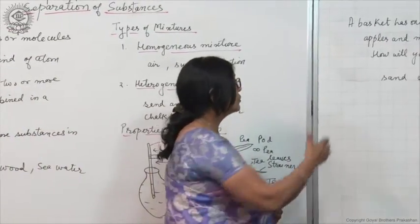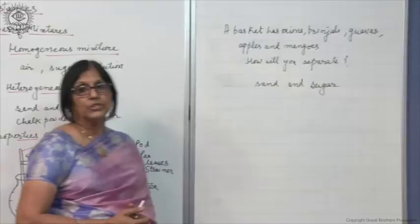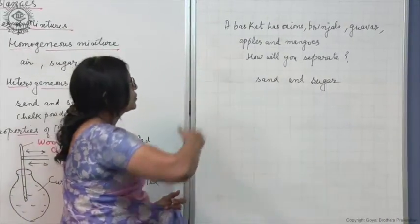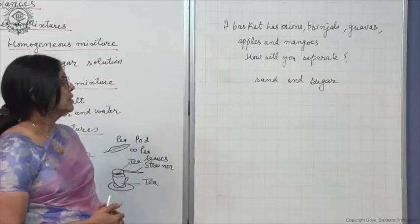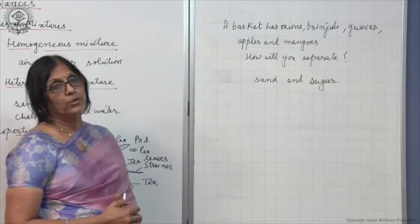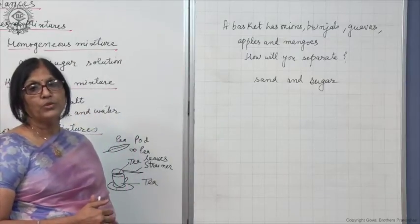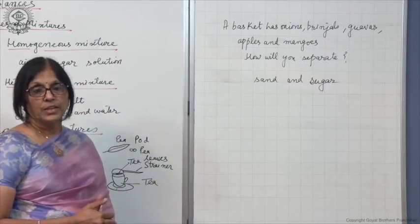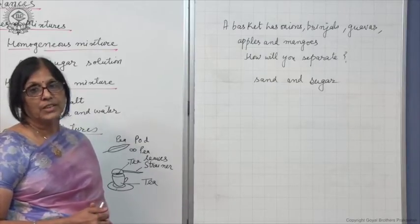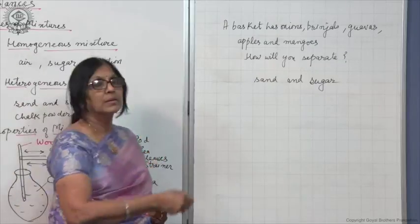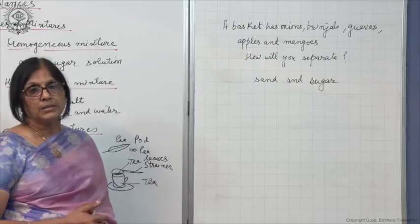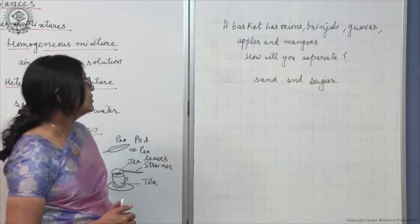Let me ask you a very simple question. A basket contains mixed fruits and vegetables—onions, brinjals, guavas, apples, and mangoes. If you are asked to separate them, how will you do it? The answer is very simple: you will pick up each fruit and vegetable and keep it separately. It is very easy.